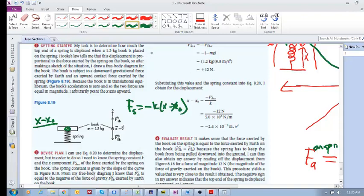Sum of the forces is mass times acceleration. Acceleration is zero, so this equals zero. So we've got force of spring on book upwards minus force of earth on book equal to zero. That's what we're doing over here.